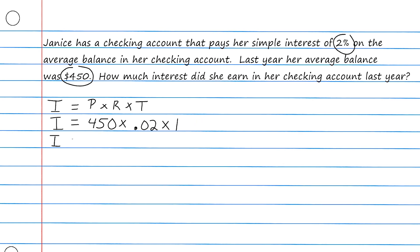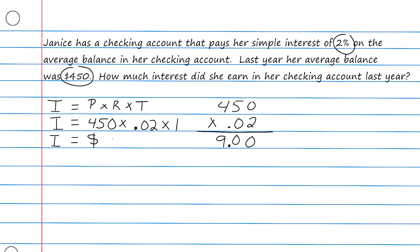So to figure out how much interest Janice accumulates over a year, we multiply 450 times 0.02, then multiply that answer by one. Going off to the side: two times 450 is 900. We have two numbers after the decimal point, so our answer must also have two decimal places, giving us $9.00.